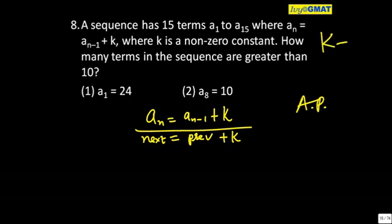And this k is zero or non-zero? That's also important. k is non-zero, that means this AP is not a constant AP. This will be either increasing type of AP or decreasing type of AP. You are given how many terms are greater than 10.